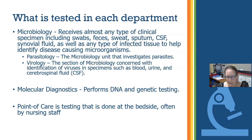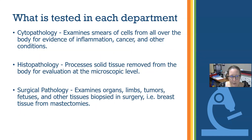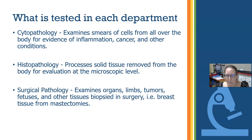Point-of-care testing is done at the bedside, often by nursing staff — for example, acute glucose checks. There's even more complex point-of-care testing such as ABGs and other chemistries that can be done at the bedside, or during surgery by the OR staff. We also have cytopathology, which examines smears of cells from all over the body for evidence of inflammation, cancer, and other conditions — 'cyto' meaning cell pathology. Histopathology looks at solid tissue, often removed via biopsies or surgical removal, sliced up and examined at the microscopic level.